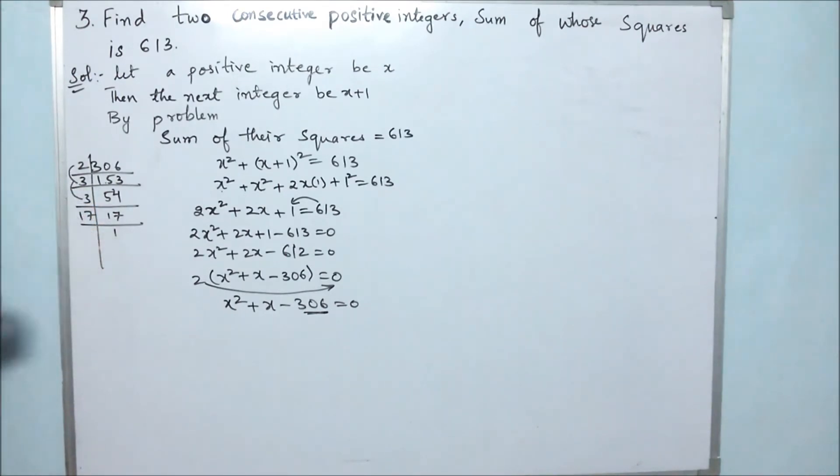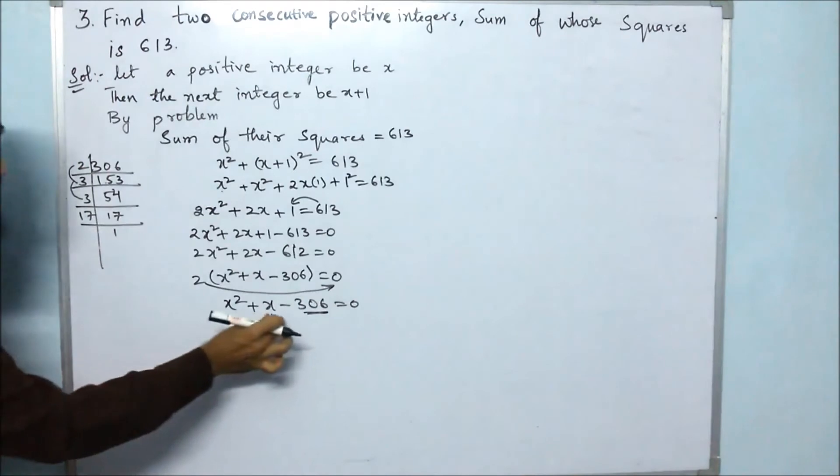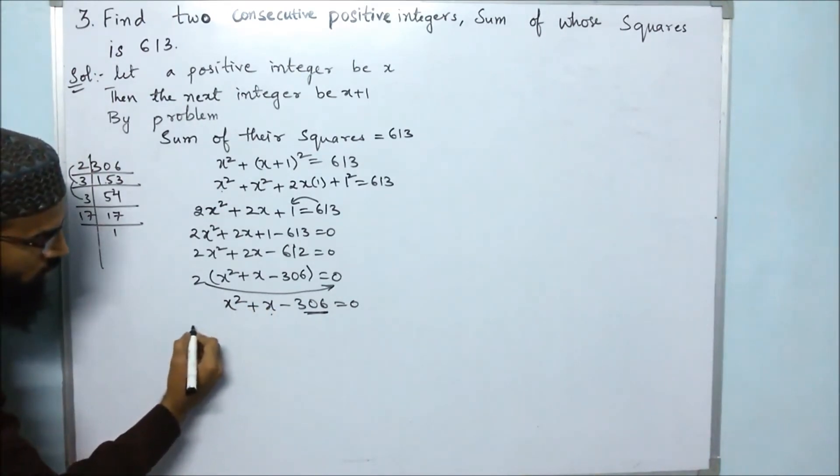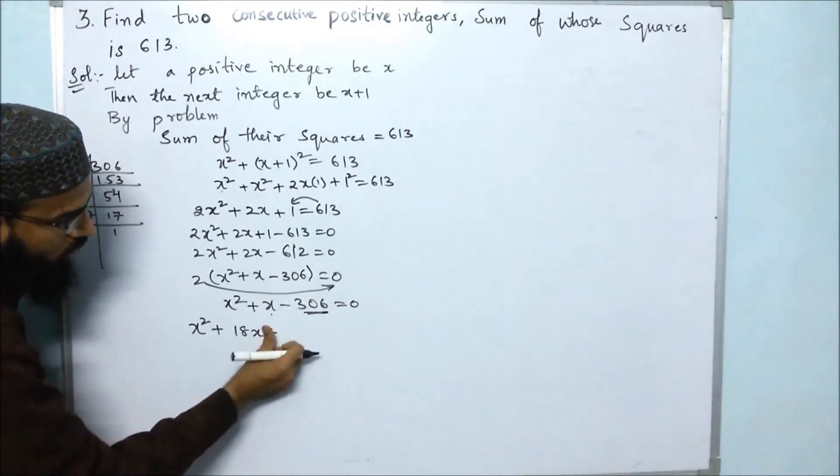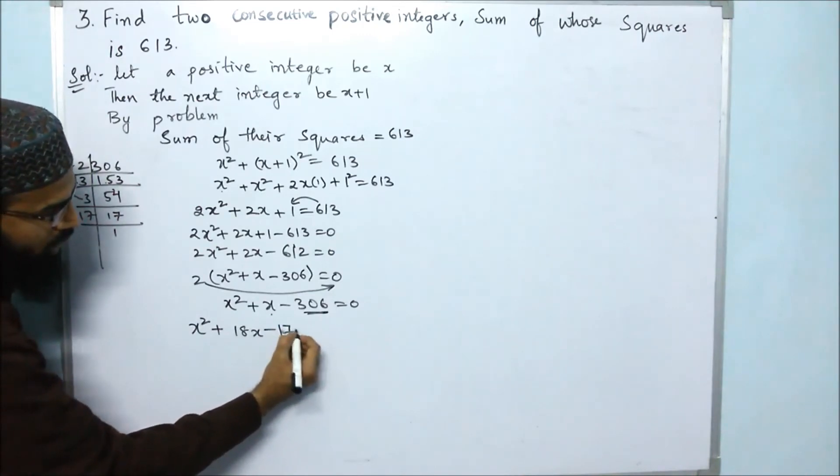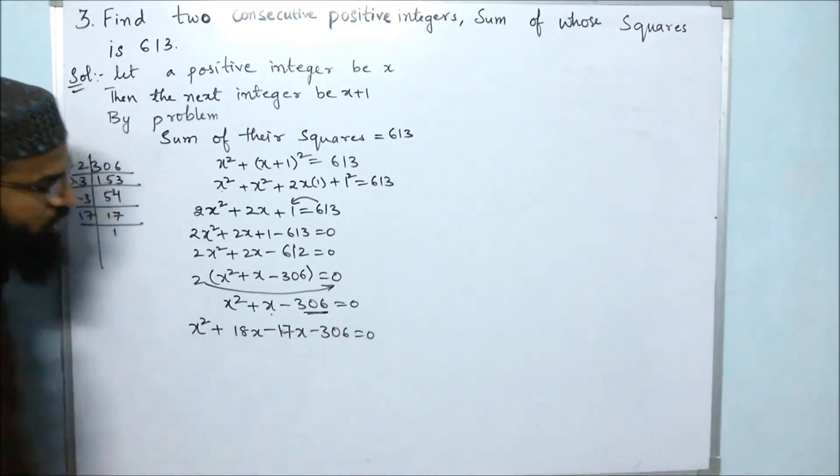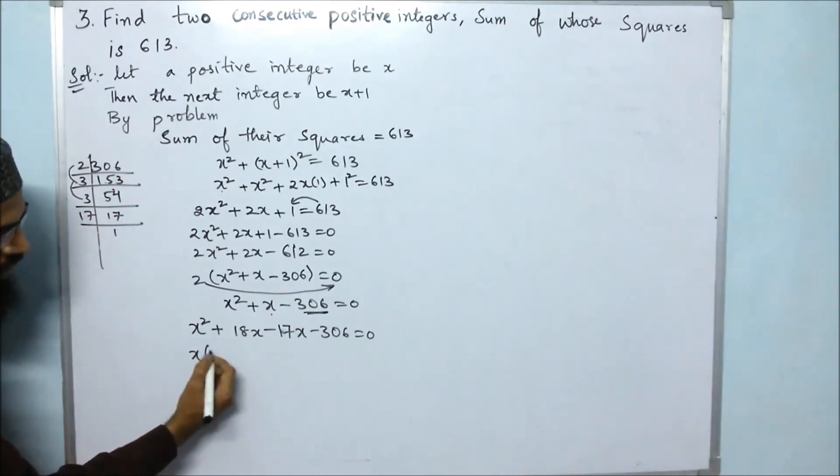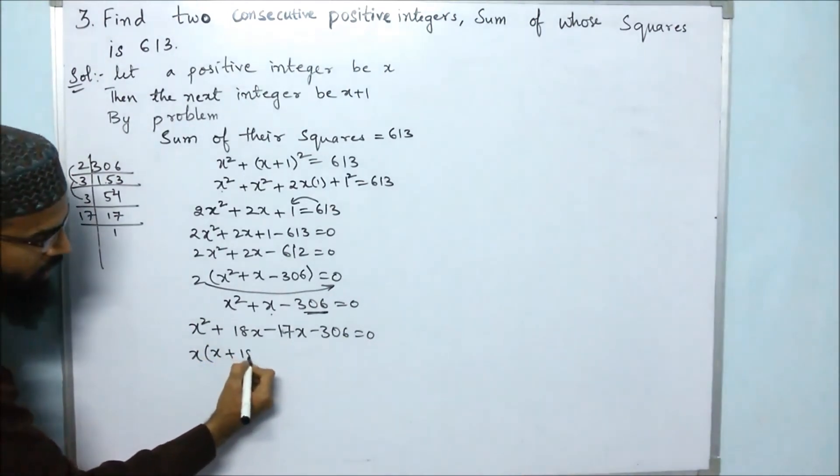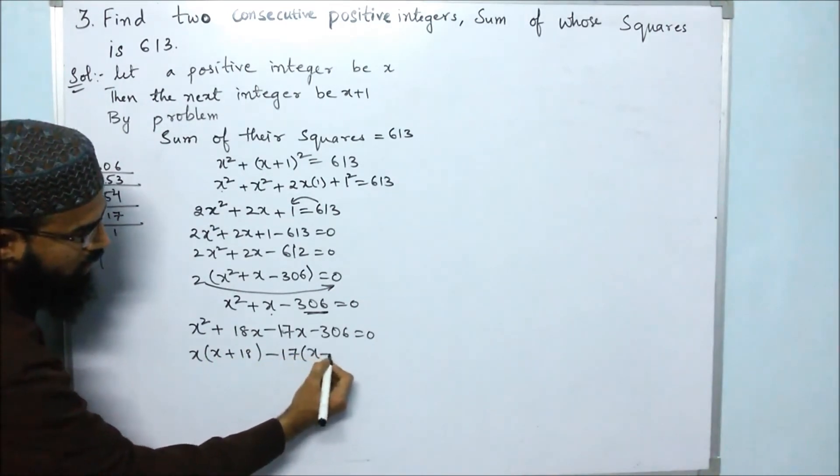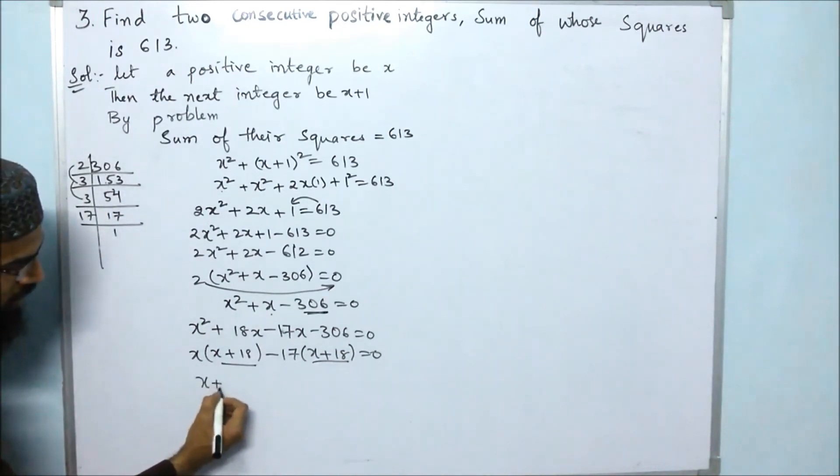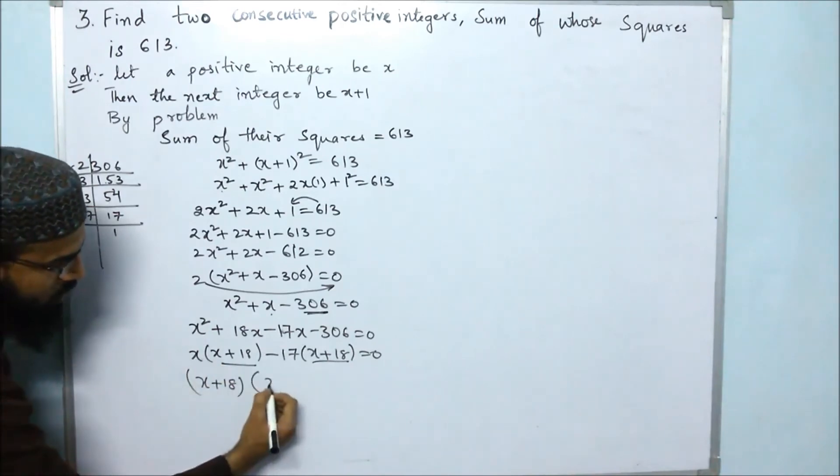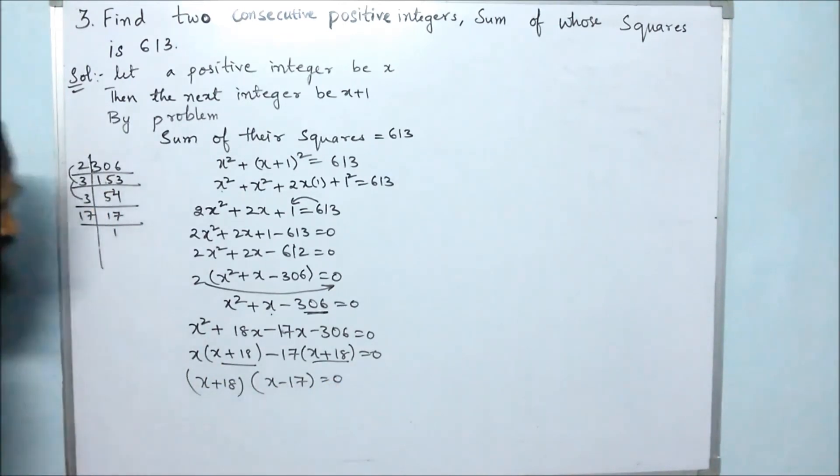So here 2 × 3 = 6, 6 × 3 = 18. 18 minus 17 - we are getting 1. We should get the middle value. So here we can take x² + 18x - 17x - 306 = 0. Next, x can be taken out as common. So x(x + 18), minus 17 is common, so x + 18 is common. x + 18 is common, and x - 17 is left.